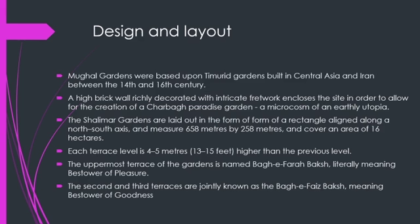Now we will talk about design and layout. Mughal Gardens were based upon Timurid Gardens built in Central Asia and Iran between the 14th and 16th century. A high brick wall richly decorated with intricate flat work encloses the site to allow the transformation into a Shalimar paradise garden. The Shalimar Gardens are laid out in the form of a rectangular plan along a north-south axis, measuring 658 meters by 258 meters and covering an area of 16 hectares.